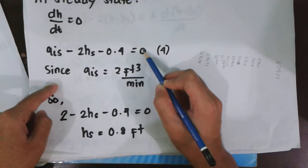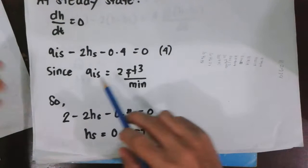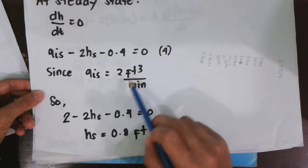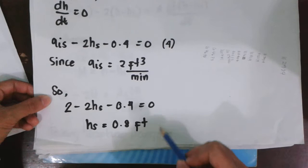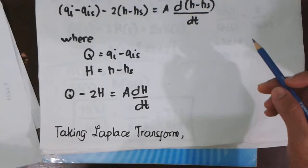Since, the subscript S indicates that the variable is at steady state. Since Qi,s is equal to 2 cubic feet per minute, we can substitute this value to arrive at the value of Hs or the level or height of the liquid before it was disturbed.